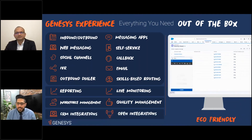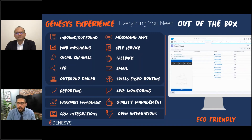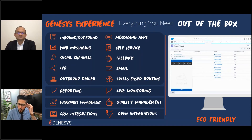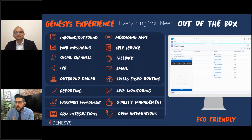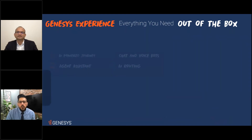If you have a ticketing system or a CRM, you want the agent to see that information the moment an interaction arrives — whether it's a call, social media, or WhatsApp. We can connect to those systems through open REST APIs or through connectors available in our App Foundry. You don't have to worry about agents opening different screens; all the information the agent needs is accessible from that same location.